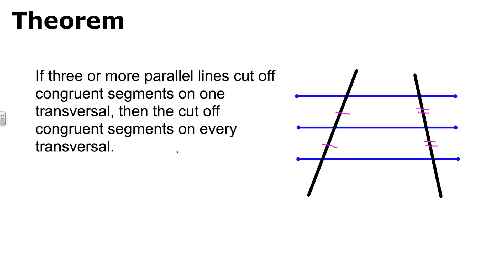Here's another theorem: if three or more parallel lines cut off congruent segments on one transversal, then they cut off congruent segments on every transversal. We have three blue parallel line segments, and two black transversals. Since the left transversal is cut into two equal parts by the three parallel lines, the theorem tells us the other transversal is also cut into two congruent parts.